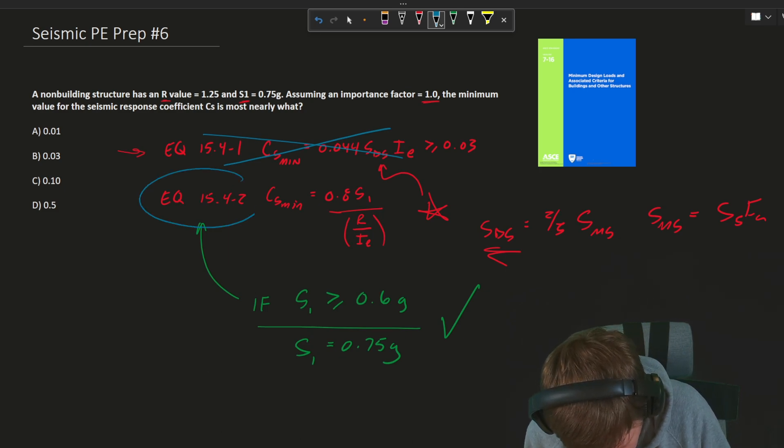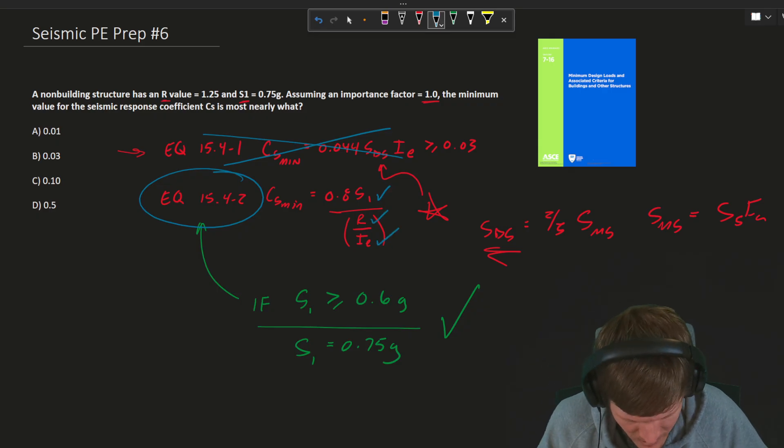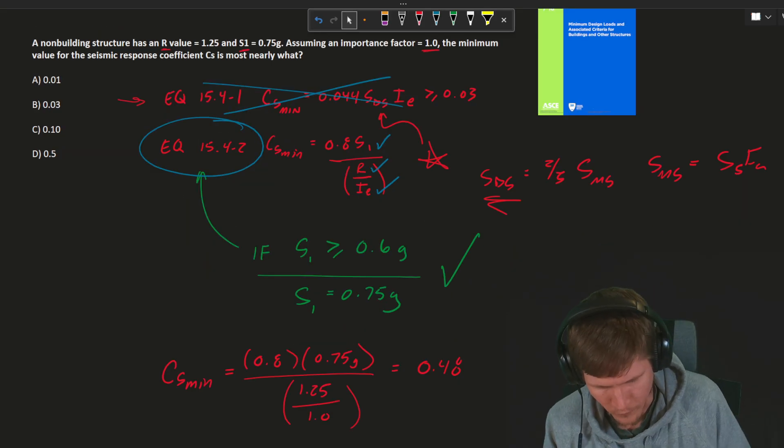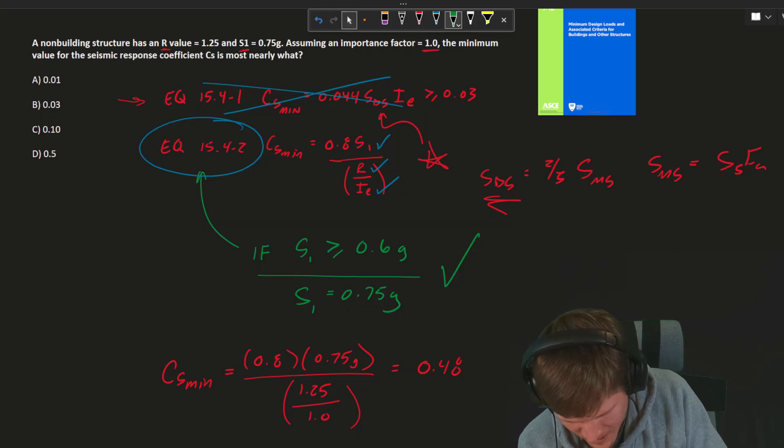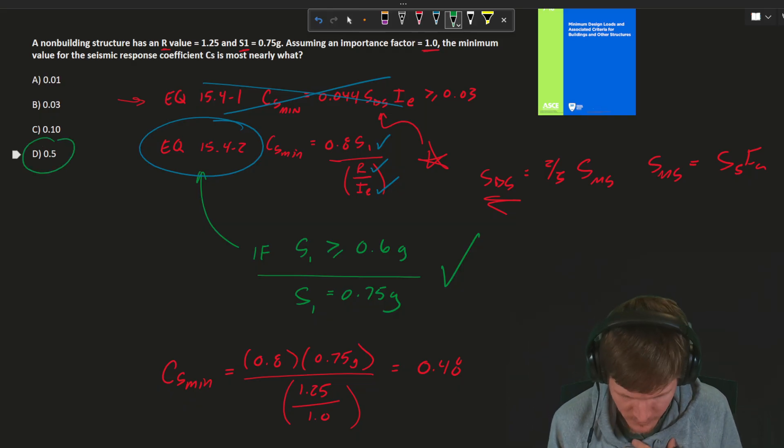And then you'll move on to the second one and you would then realize, well, this equation is only applicable with that criteria if it's true. S sub one is equal to 0.75 G, which means this is true. So this first equation, regardless, is not to be used as a lower bound C sub S equation. Instead, you must use 15.4-2. And when we look at that, lo and behold, we have S sub one, we have R, we have your importance factor. So we have everything. Let's plug in and see what we get. That gets us 0.48. And when we go up, well, it's pretty clear. There's only one choice. D is going to be that final answer that I would choose. Everything else is way too low of C sub S.